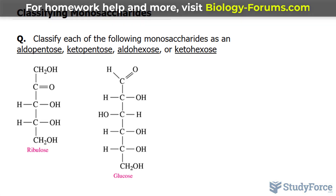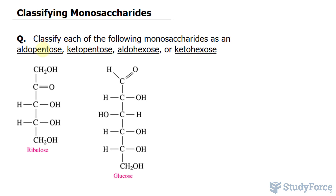As you can see, all of these four words end with O-S-E, which means they are sugars. In addition, we can tell some information about these sugars based on the base of each word. Pent suggests five carbons, while hex is six carbons. In addition, if we have aldo, that means it's an aldehyde.